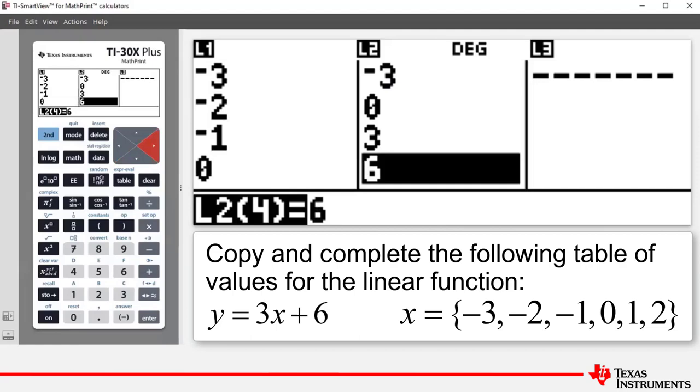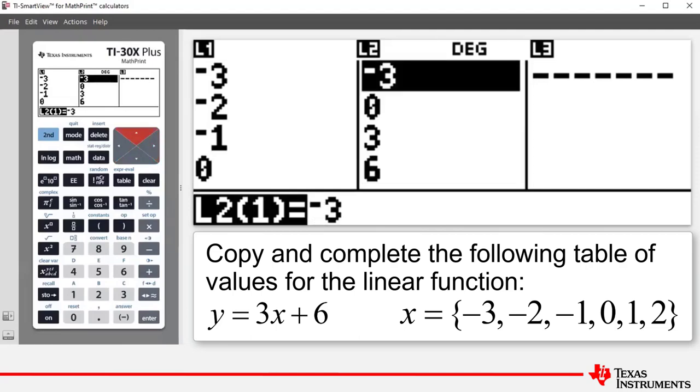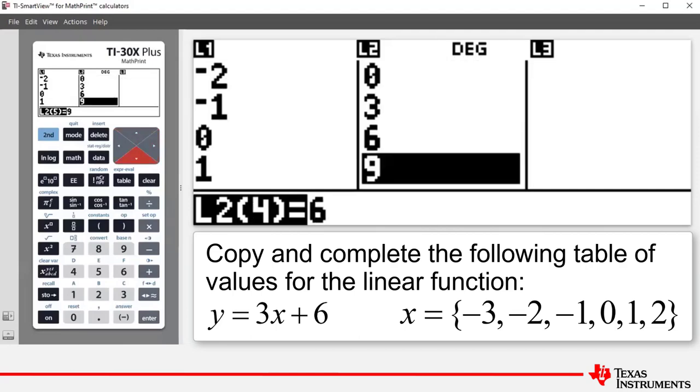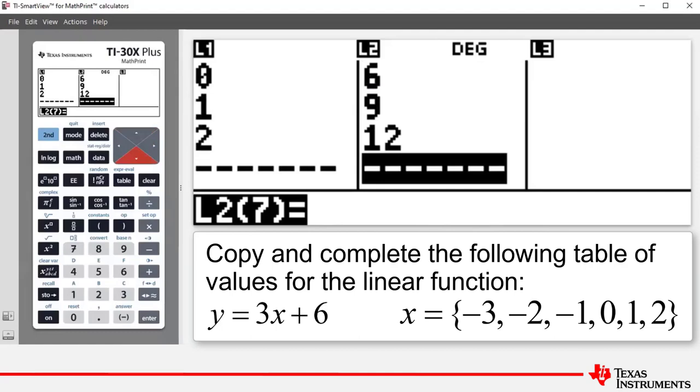So in other words, L2 now displays the values negative 3, 0, 3, 6, 9 and 12. So the table of values for y equals 3x plus 6 for these x values can now be completed.